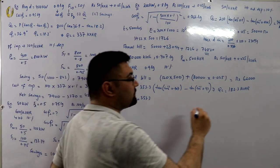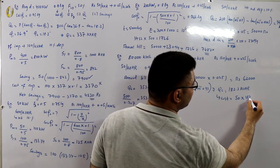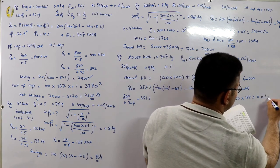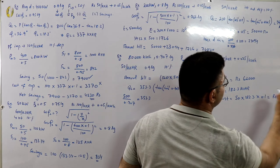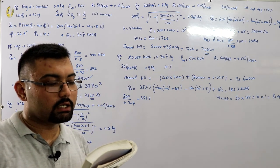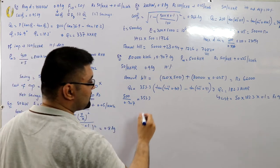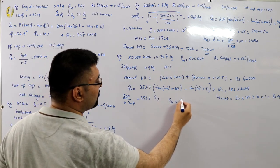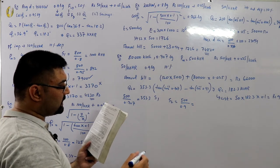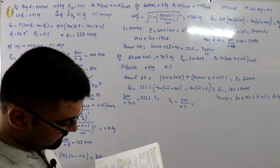The cost of this Qc: 50 rupees per kVAr × 182.3 kVArs × 10% depreciation = 912 rupees annually. After PF improvement from 0.707 to 0.9: new S₂ = 353.3 / 0.9 = 392.6 kVA. Note the book had a slight misprint here but S₂ = 392.6 kVA.